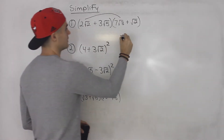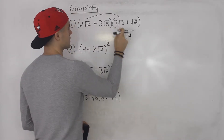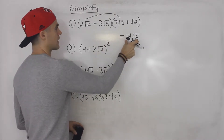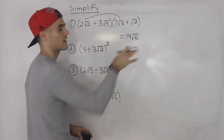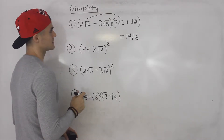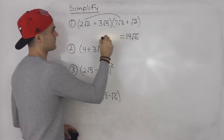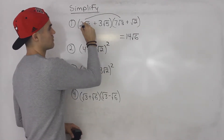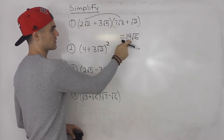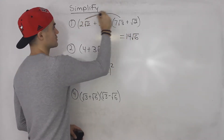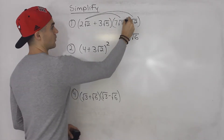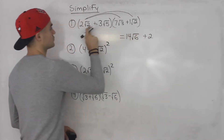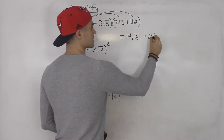2 times 7 gives us 14, and then √2 times √3 gives us √6. We're just going to multiply straight through without writing out every intermediate step. So 2√2 times 7√3 gives us 14√6. Then 2√2 times √2 — there's a 1 in front — so 2 times 1 gives us 2, and √2 times √2 is just 2.